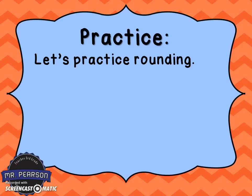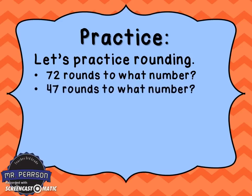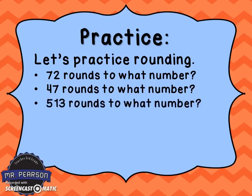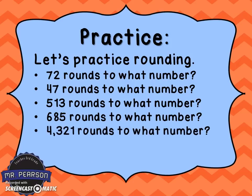Let's practice — grab some paper. The first one: round 72. What number does it round to? Ask yourself, what two tens is 72 between? Next, 47 — what number does it round to? Remember to ask: what two tens is 47 between? Then 513 — what two tens is that between? Once you figure that out, round that number. Here's another: 685. What two tens is 685 between? Once you've done that, round the number. And here's a challenge problem: 4,321. What two tens is that between?